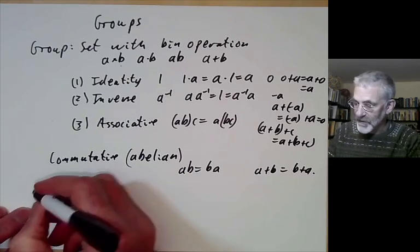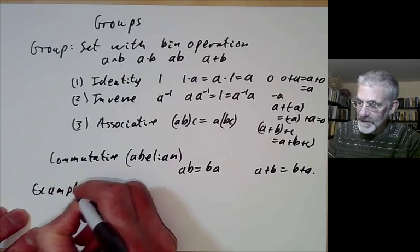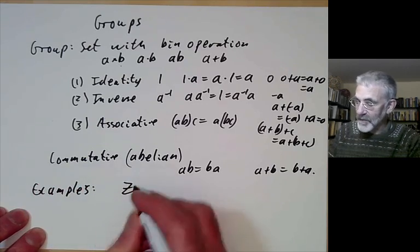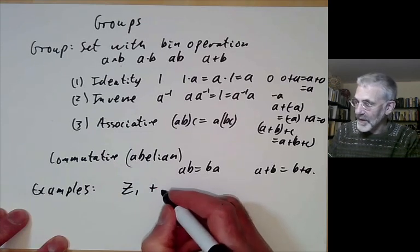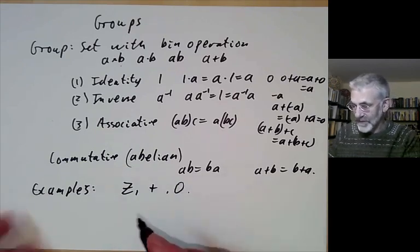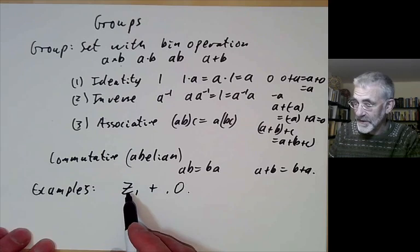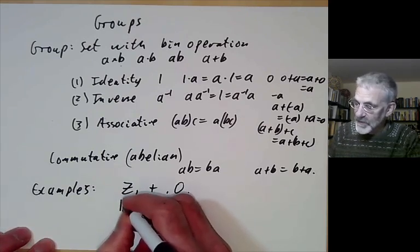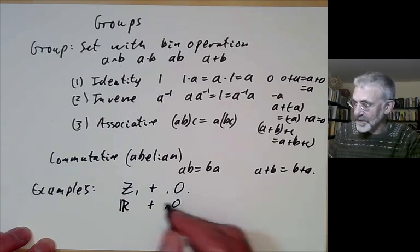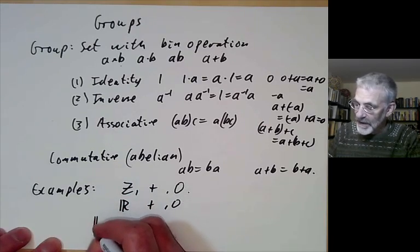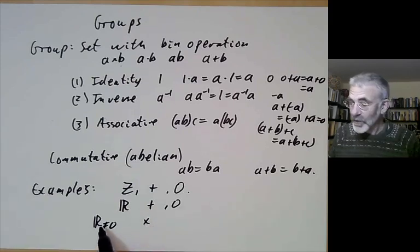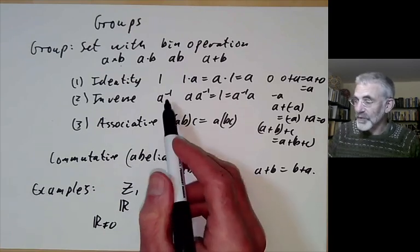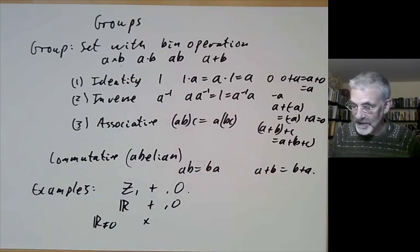Let's have some basic examples of groups. We could have the group of integers, where the group operation is addition — the usual addition — with the usual identity 0, and negation of an element as its inverse. You can do the same with the real numbers, again using addition and with 0. Or you could have the non-zero real numbers, where the operation is now multiplication. If you took all real numbers under multiplication, this wouldn't be a group, because 0 doesn't have an inverse under multiplication.